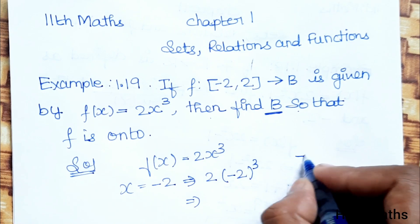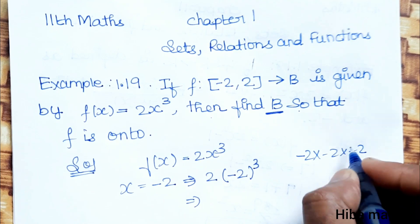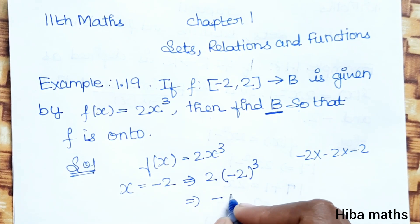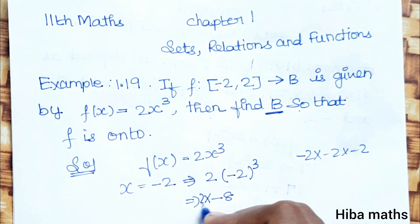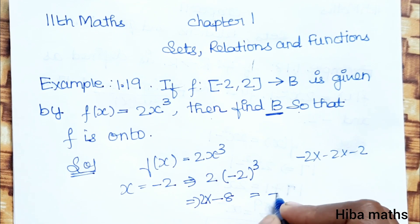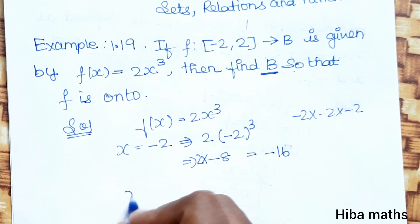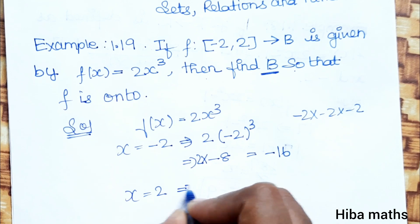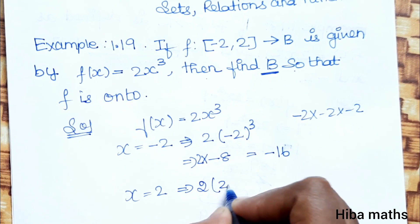(-2) × (-2) × (-2) = -8, and -8 × 2 = -16.